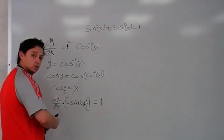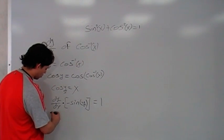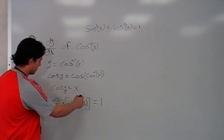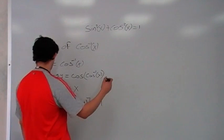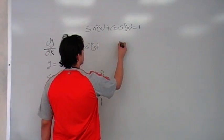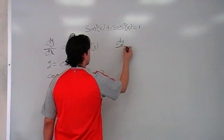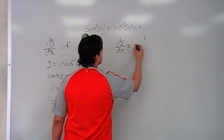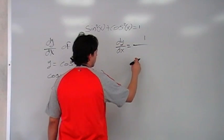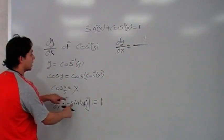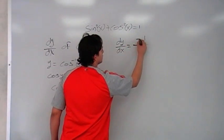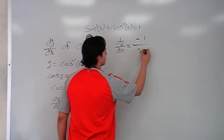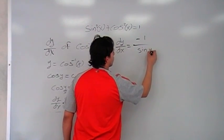Okay, now we need to leave this part alone. The dy dx, we need to leave it alone, so we're going to divide everything by negative sin. So, at the end, we're going to have dy dx equals 1 divided by, let me transpose the negative on top here, divided by negative sin of y.